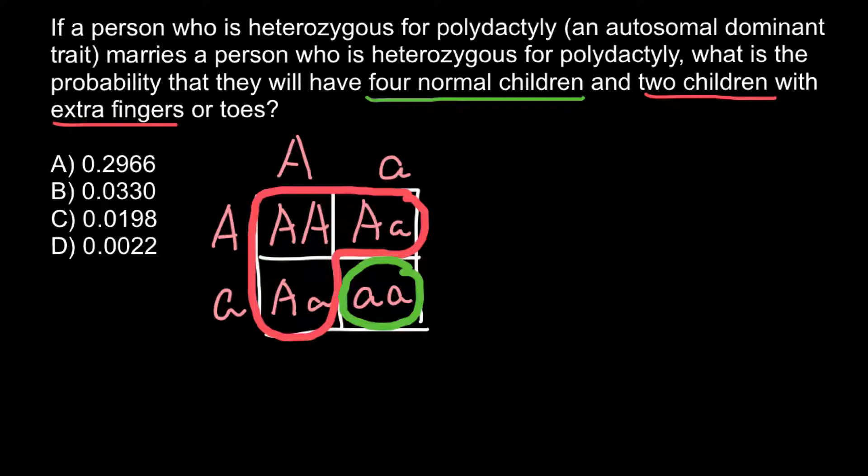We could solve this problem by listing all the combinations and their probabilities, but I want to show you the best way to solve it. We are going to use a formula whenever we have a sequence that is not ordered. This approach will be much easier and will minimize the probability of making a mistake.